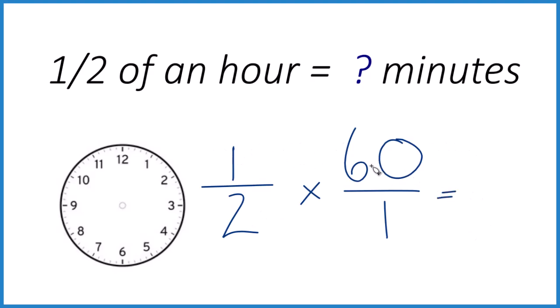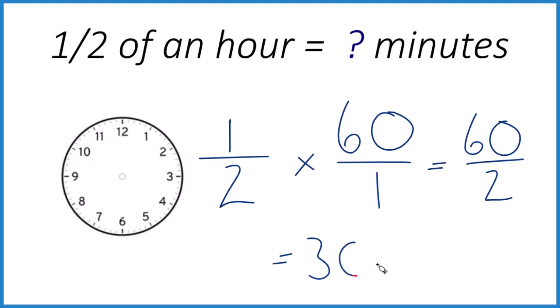And when we multiply, 1 times 60, that is 60, 2 times 1, that is 2, and if you divide 60 by 2, you get 30 minutes.